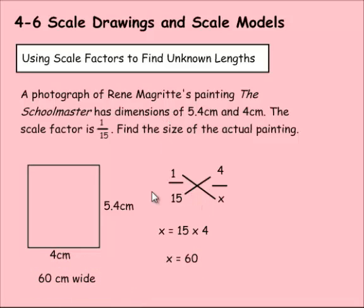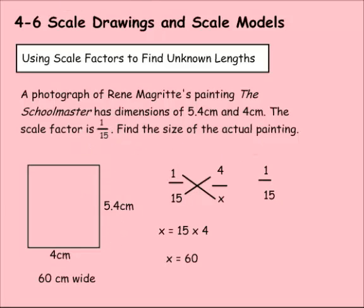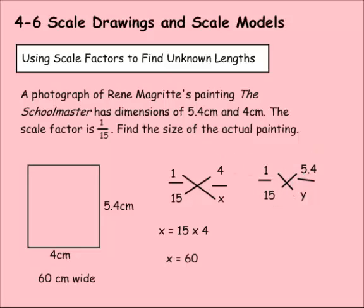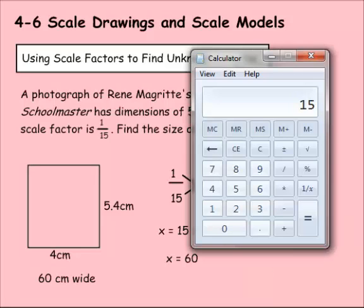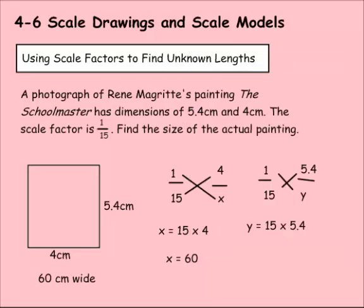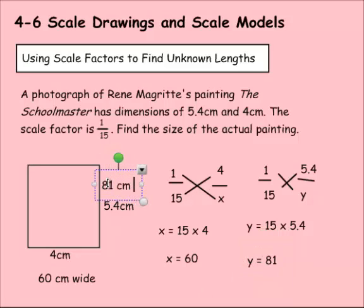Now let's find how tall it is using the same scale factor, 1 to 15. The photo is 1, the actual size is 15. The photo is 5.4 centimeters tall, so I line that up on top with the 1, and we solve for y on the bottom. Cross multiplying: 1y equals 15 times 5.4. 15 times 5.4 equals 81, so y equals 81. This painting is 81 centimeters tall.